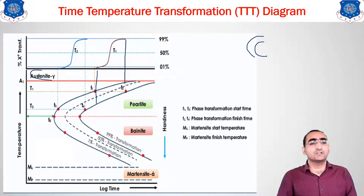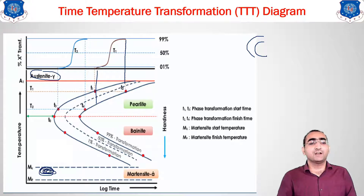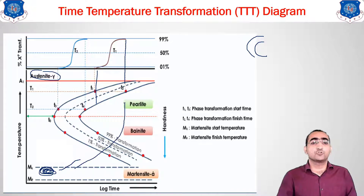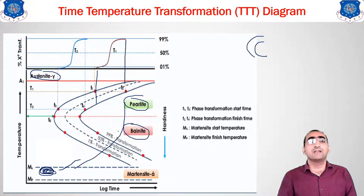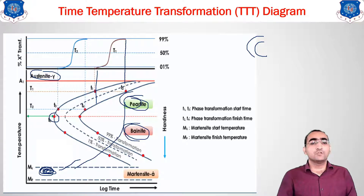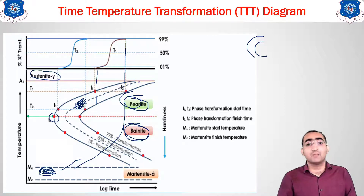You can see the austenitic range on the diagram. If cooling is rapid — less time — you obtain the martensitic region. As time increases, the diagram goes further, giving you the pearlitic and bainitic regions. There is a 'nose' on the diagram: above the nose you get pearlite, below it you get bainite. In the central mixed region you can get pearlite, bainite, martensite, ferrite, and austenite — all microstructures together.